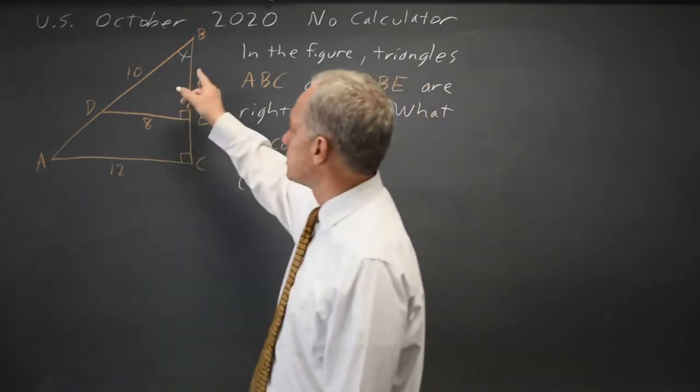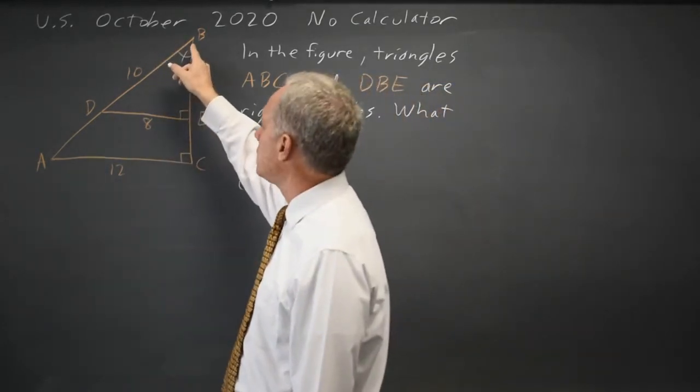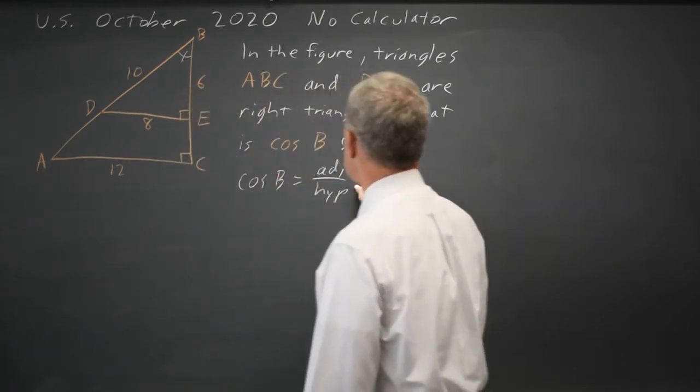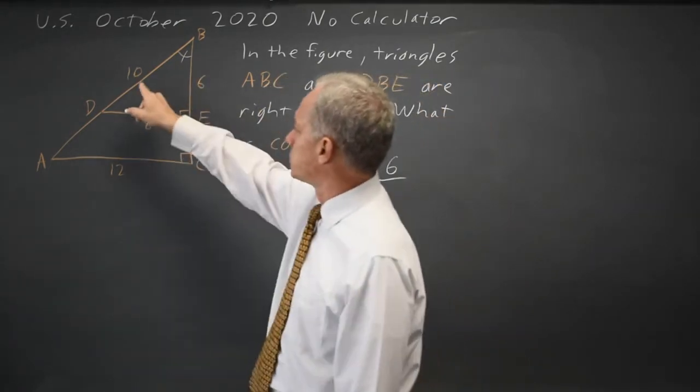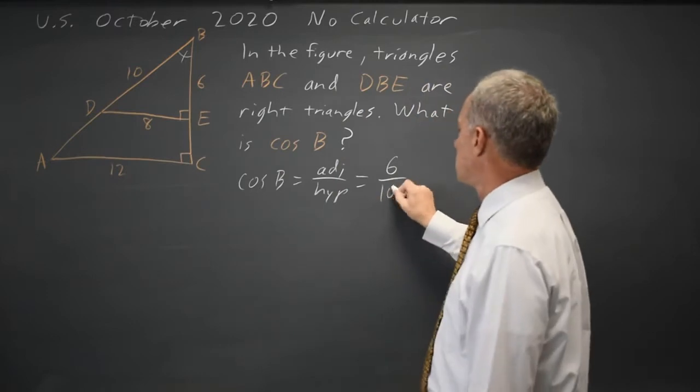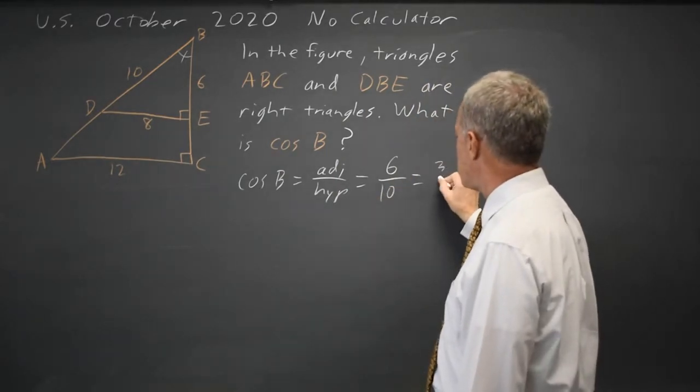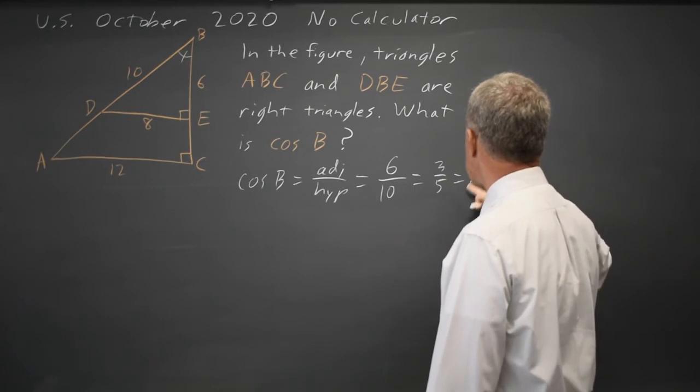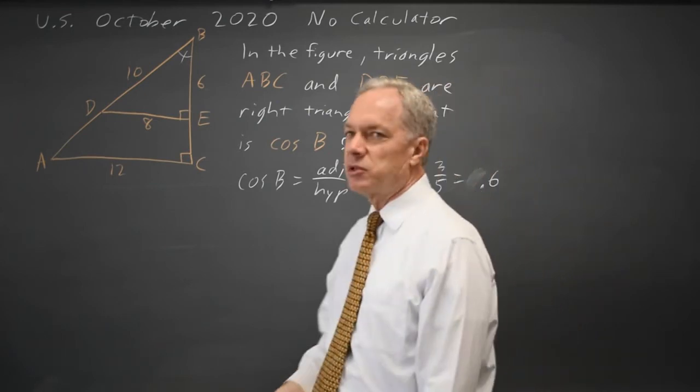Since we have the 6, 8, 10 right triangle with angle B, that would be the adjacent side 6 over the hypotenuse, which is 10, and we can simplify that to 3 over 5 or 0.6.